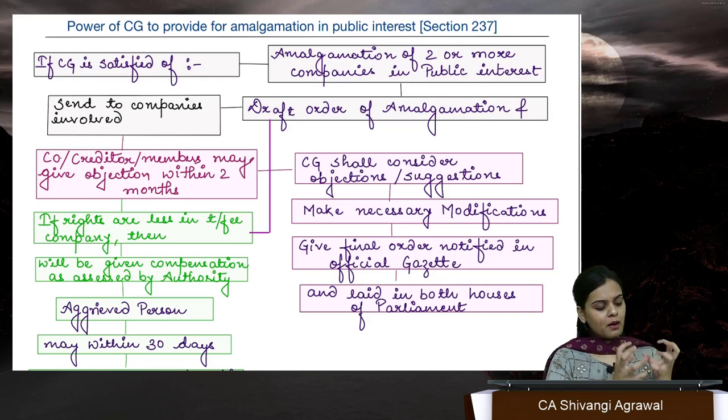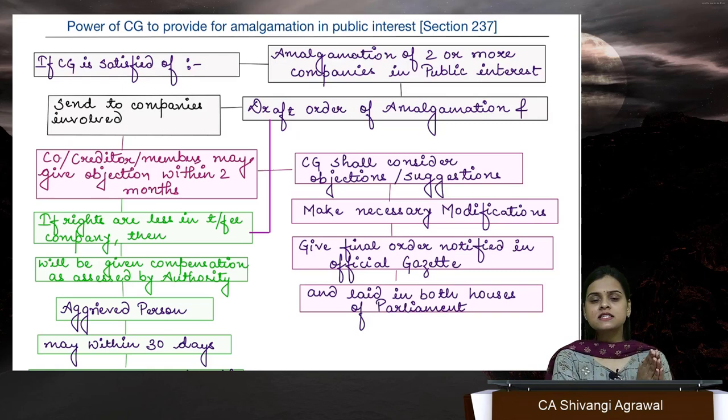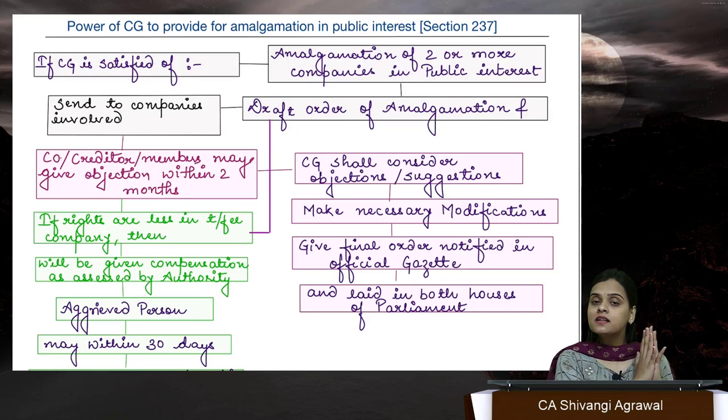Section 239: Whatever company has been merged or amalgamated — the books and papers of that company cannot be disposed of or destroyed without the permission of central government. You need to make an application to central government, which will ensure there is no evidence left of any offence before permitting you. Section 240 states that if two companies are merged and the old company had committed an offence with some officer in default responsible, that officer will continue to be liable even after the merger, demerger, or amalgamation.